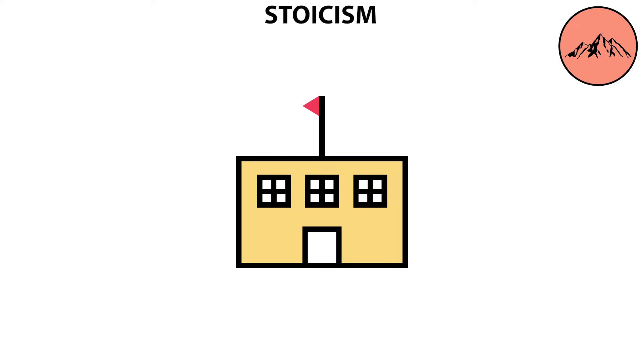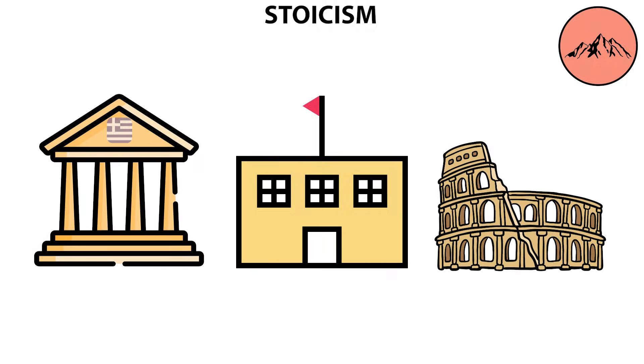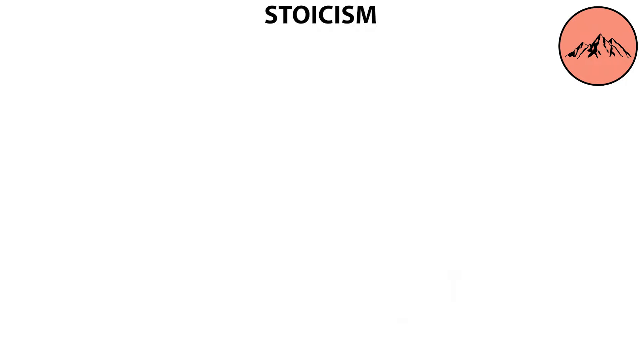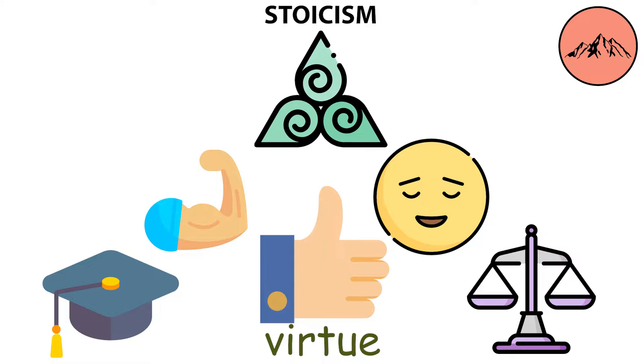Stoicism is an ancient school of philosophy that originated in Greece and later flourished in Rome. The Stoics believed that virtue, specifically wisdom, courage, moderation, and justice, is the only good, and that practicing these virtues is enough to achieve a well-lived life, also known as eudaimonia.